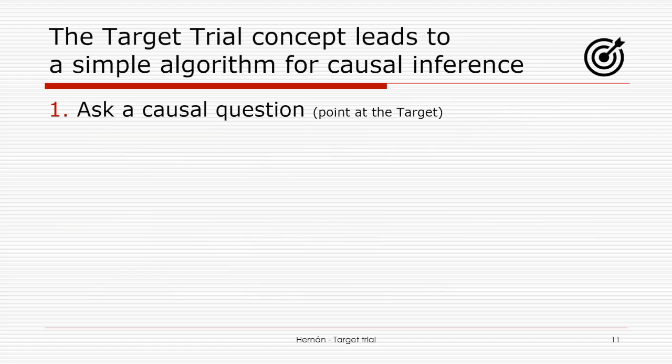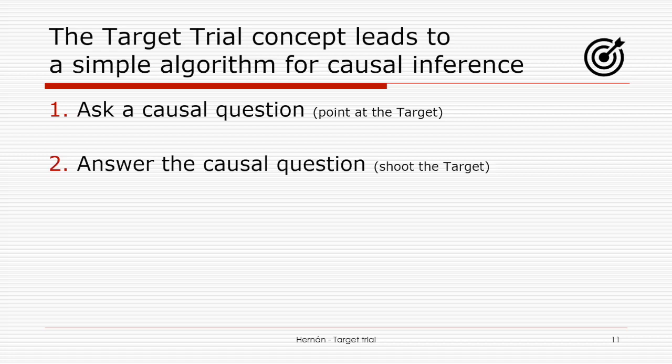Thinking in terms of a target trial, causal inference involves two steps: first, ask a causal question; second, answer it. Both are crucial. Often when we teach causal inference, everything focuses on step two — how to use the methods — but the methods have little value if we don't know what we're using them for. Asking the causal question means pointing at the target; answering it means shooting. A simple device: tell me the protocol of your target trial.